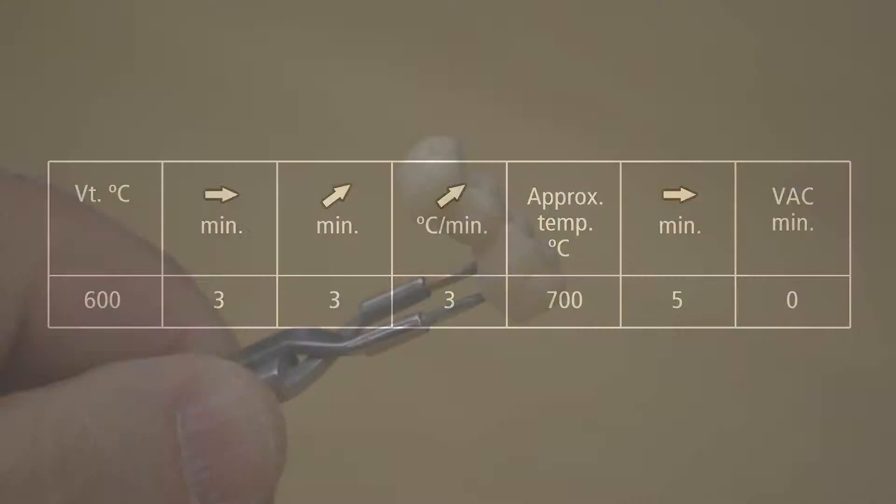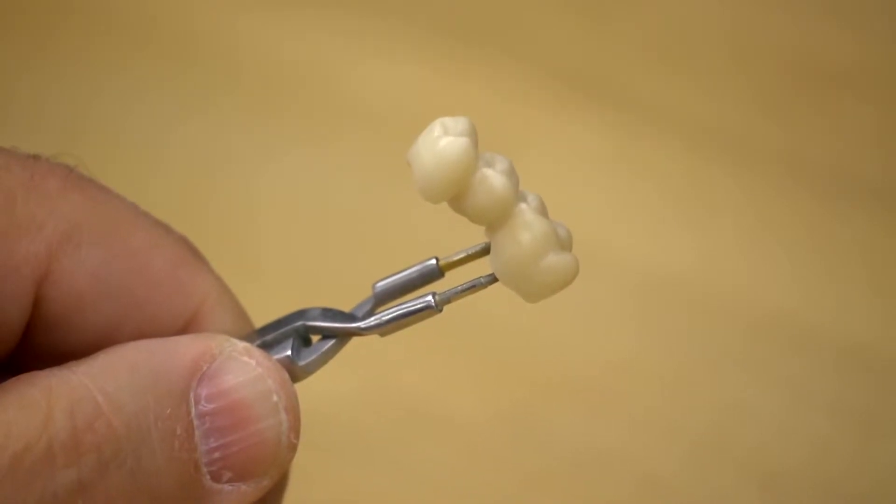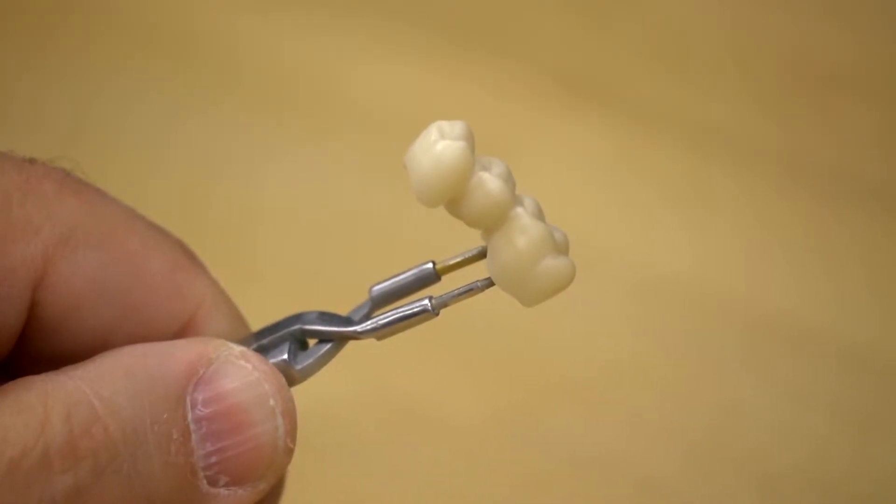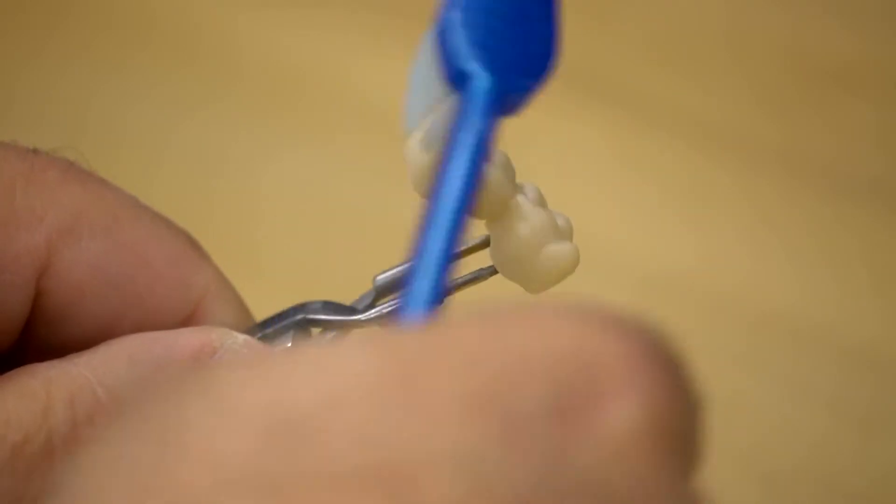Sirona has a unique coloring solution that is designed to provide proper color intensity in just five minutes. Clean the restoration lightly to make sure there is no loose dust on the unit.